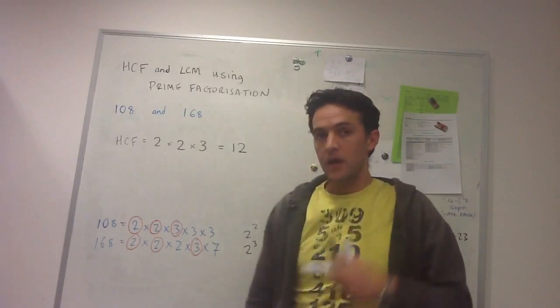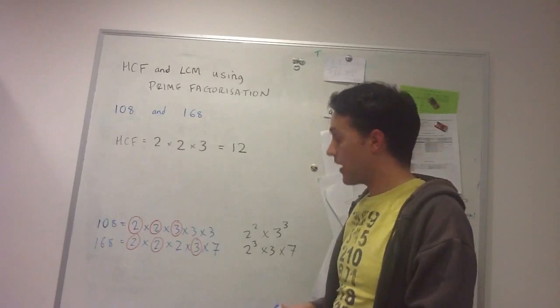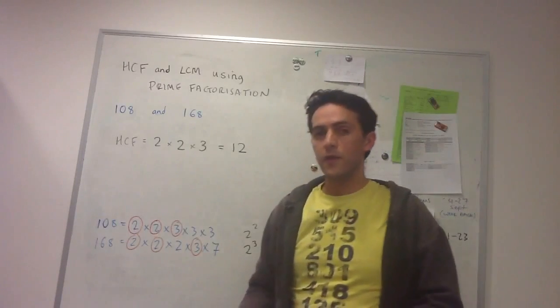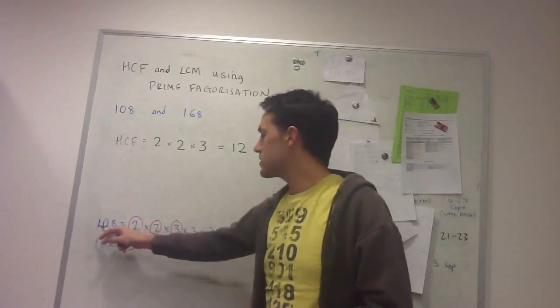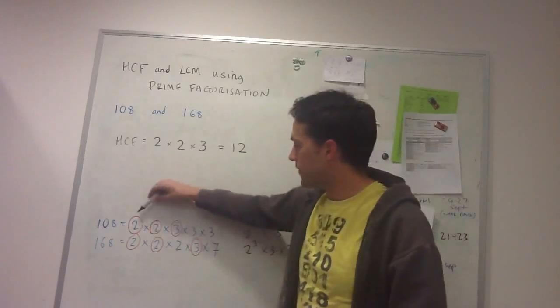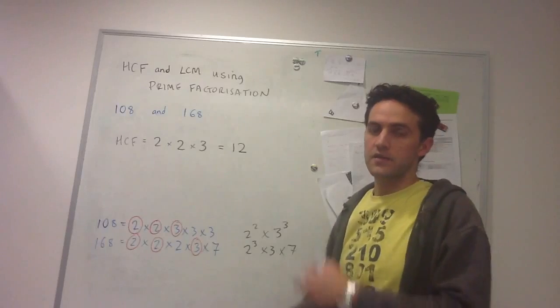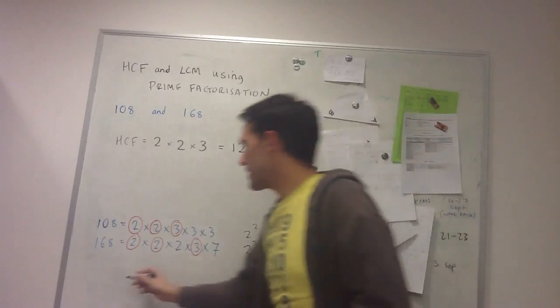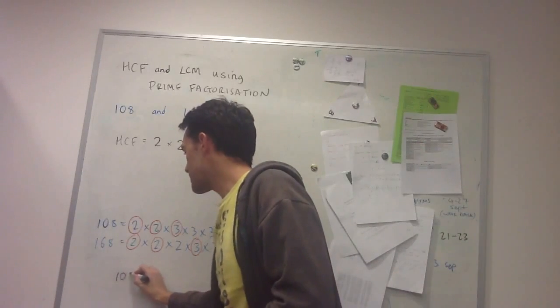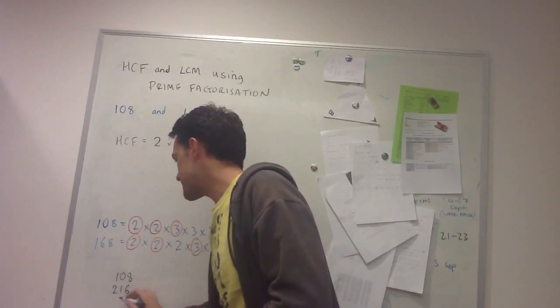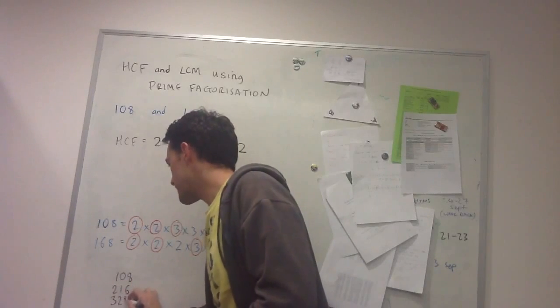Now when we come to the lowest common multiple, what I recognize is that all the multiples of 108 have this in their prime factorization. So we're going in the other direction. If you look, let's have a look at a few of the multiples of 108. There's 108, and then 216, and then 324.